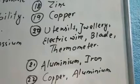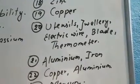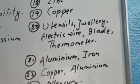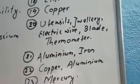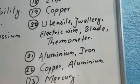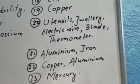Number twenty: name any five objects used in our everyday life which are made of metals. You can see this is jewelry, electric wire, blade, thermometer, etc. There are so many objects. Number twenty-one: name two metals which are used for making cooking utensils and water boilers for factories - aluminium and iron.